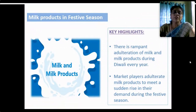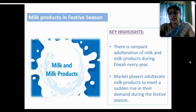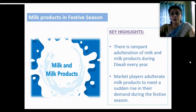Coming to the festive season context: many sweets, savouries and religious delicacies made during festive seasons are mainly from milk. Rampant adulteration of milk and milk products happens during Diwali especially every year. Market players adulterate milk products to meet the sudden rise in demand during the festive season. Indian festivals are incomplete without sweets that use a lot of milk products like ghee, khoya and mawa.